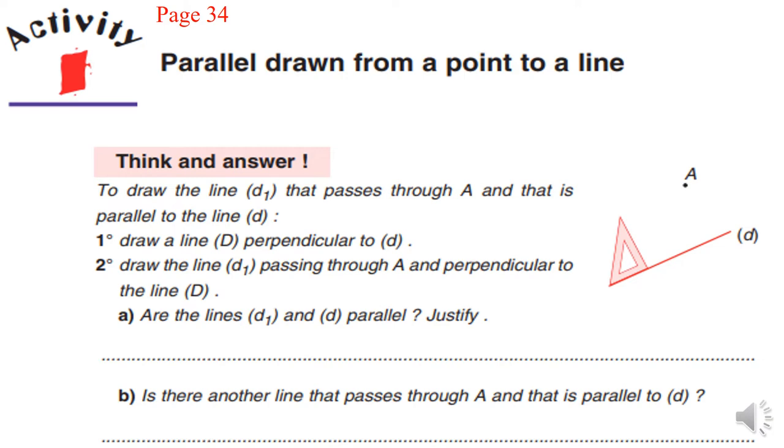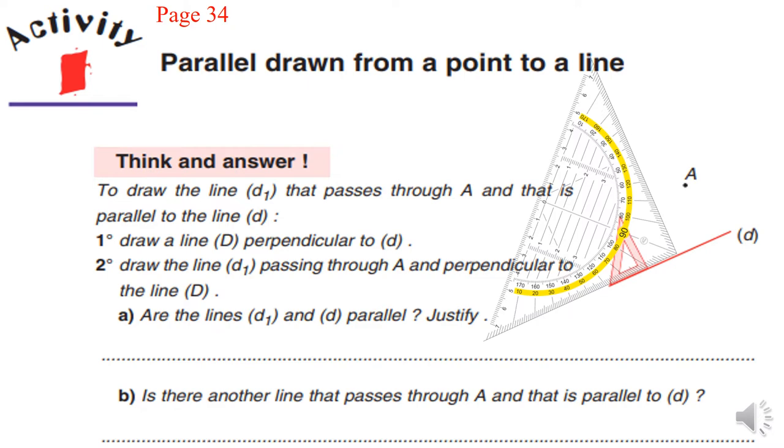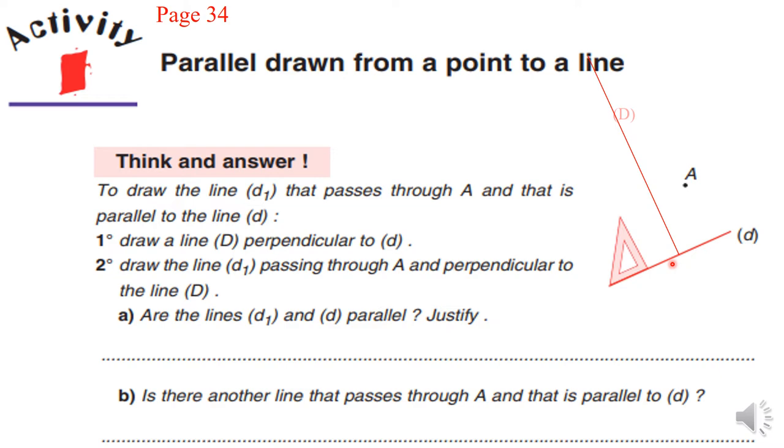A line D, capital D, perpendicular to the line d, small d, okay? Then, first we have to put our set square like this in the front of the line and I will draw a line perpendicular to the line d. The name of this one is capital D.